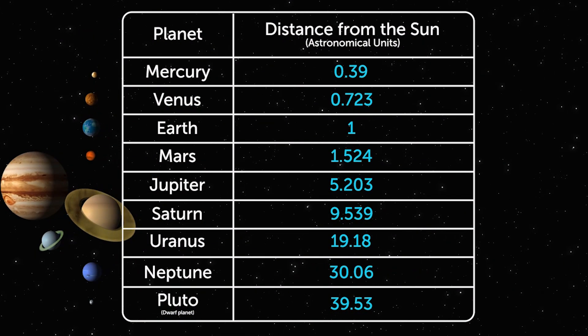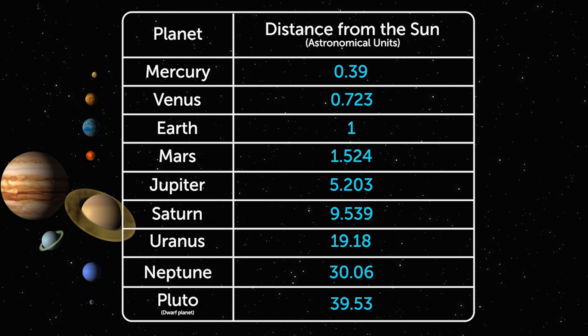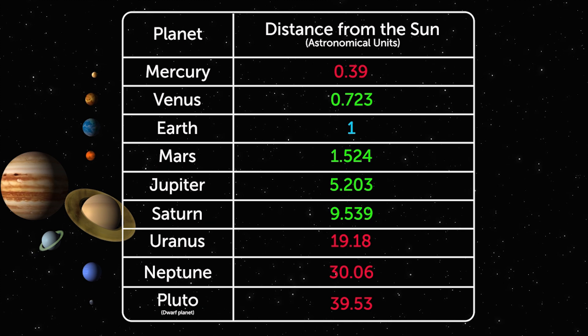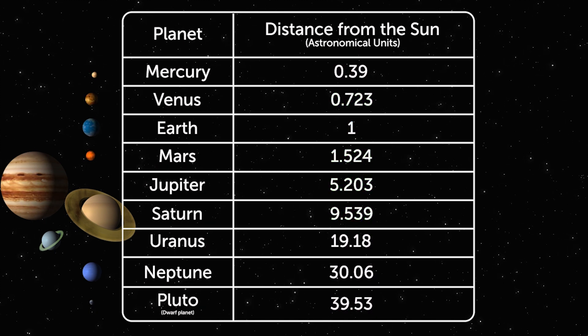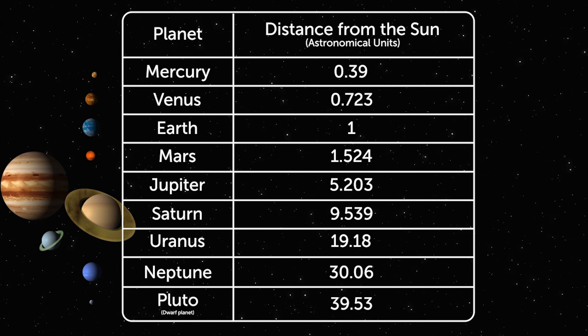Look at the distances between the other planets and the Sun. Some have a measurement with two decimal places and others have three decimal places. If scientists wanted to round these distances to one decimal place, what would they need to do?